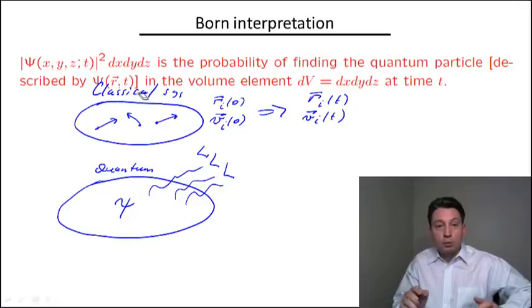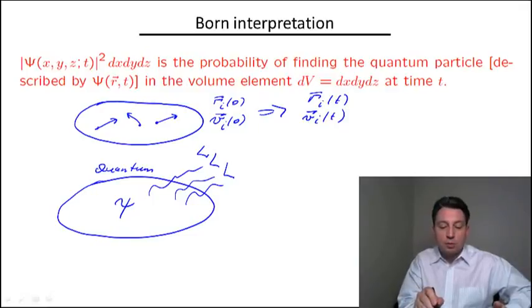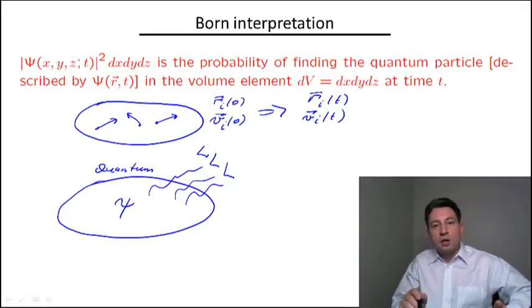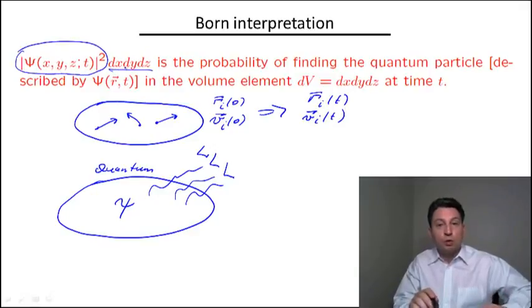What we know now as the Born rule is written here. He proposed, and afterwards it was confirmed by comparing with experimental data, that the absolute value of the wave function evaluated at a certain position in space in a certain moment of time, |Ψ(r,t)|², gives the probability density of finding a quantum particle described by this wave function in this position and at this moment of time t. The probability itself is |ψ|² times the volume, the elementary volume in the vicinity of a certain point.